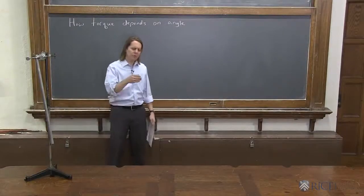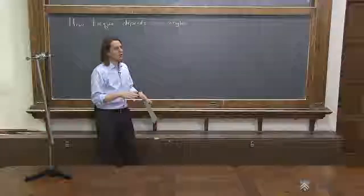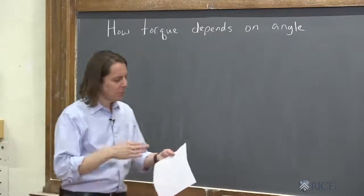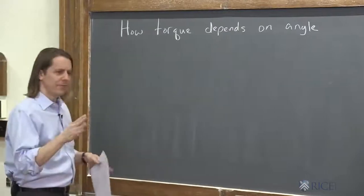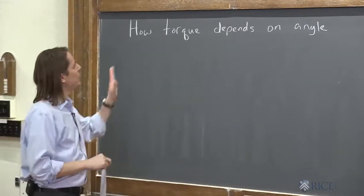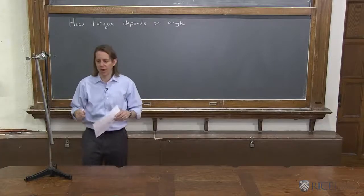We've done a few cases of torques where the force is perpendicular to the motion. Now we're going to do it at an arbitrary angle. We're going to do it carefully to make sure we get the sign right, and we're going to treat the vectors very carefully. We're going to look at how torque depends on angle, and we're going to do it with this hinged rod.